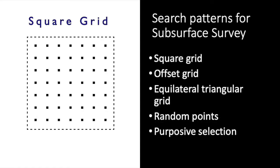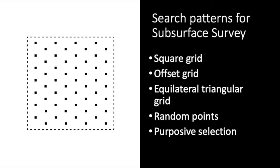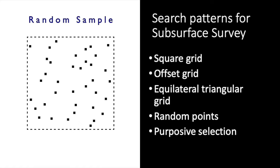Survey by subsurface tests such as shovel tests, test pits, or augering almost always conform to some kind of grid. The grid most commonly used is a square grid. If the object of the survey is to estimate parameters of some population of artifacts, most kinds of grids will operate almost equally well. However, if the object is to find sites, then a square grid is less effective than the other alternatives, because it has a lower probability of intersecting sites of a given size. An offset grid has a slightly higher probability of intersection, while an equilateral triangular grid has a much higher one for circular targets. Another possibility for sampling surveys is to use random points, while a more targeted survey could also use purposive selection of subsurface test points.